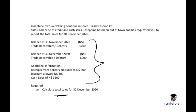Josephine owns a clothing boutique in town — Classy Fashion CC. Sales comprise both credit and cash sales. Josephine has been out of town and has requested you to report the sales for 30 December 2020.